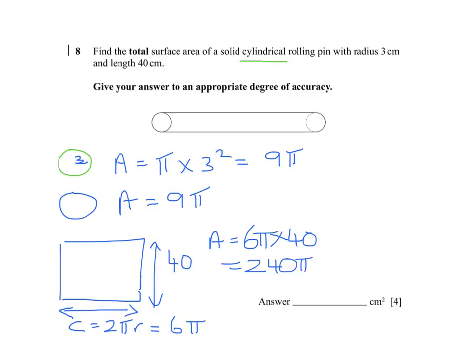So the total area will be 240pi plus 9pi plus 9pi. So that is plus 18pi, and that gives us an answer of 258pi.